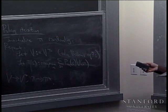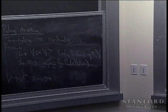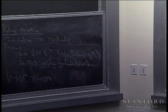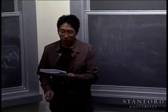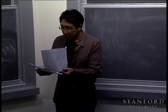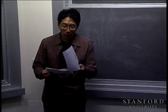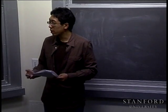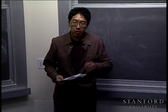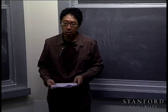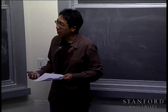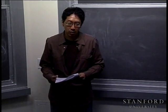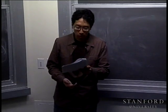So we now have two algorithms for solving MDPs. Given the 5-tuple — the set of states, the set of actions, the state transition probabilities, the discount factor, and the reward function — you can apply policy iteration or value iteration to compute the optimal policy for an MDP.